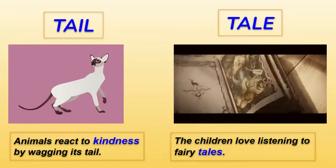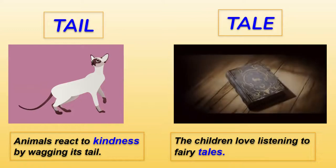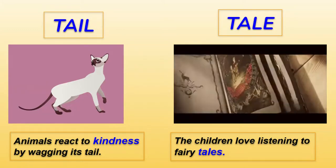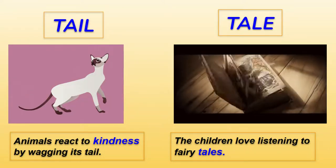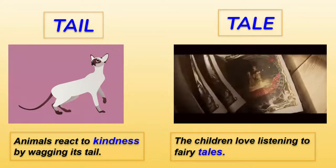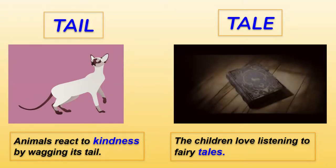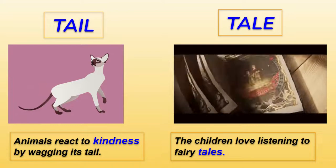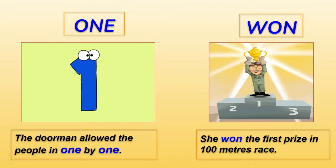T-A-I-L is a tail — the small cat is wagging its tail and feeling happy. 'Animals react to kindness by wagging their tail.' T-A-L-E is a tale — a story: children love listening to fairy tales.